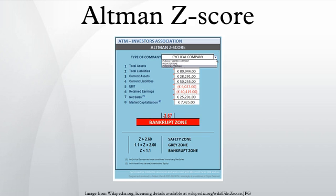The Z-score formula for predicting bankruptcy was published in 1968 by Edward I. Altman, who was, at the time, an assistant professor of finance at New York University. The formula may be used to predict the probability that a firm will go into bankruptcy within two years. Z-scores are used to predict corporate defaults and as an easy-to-calculate control measure for the financial distress status of companies in academic studies.